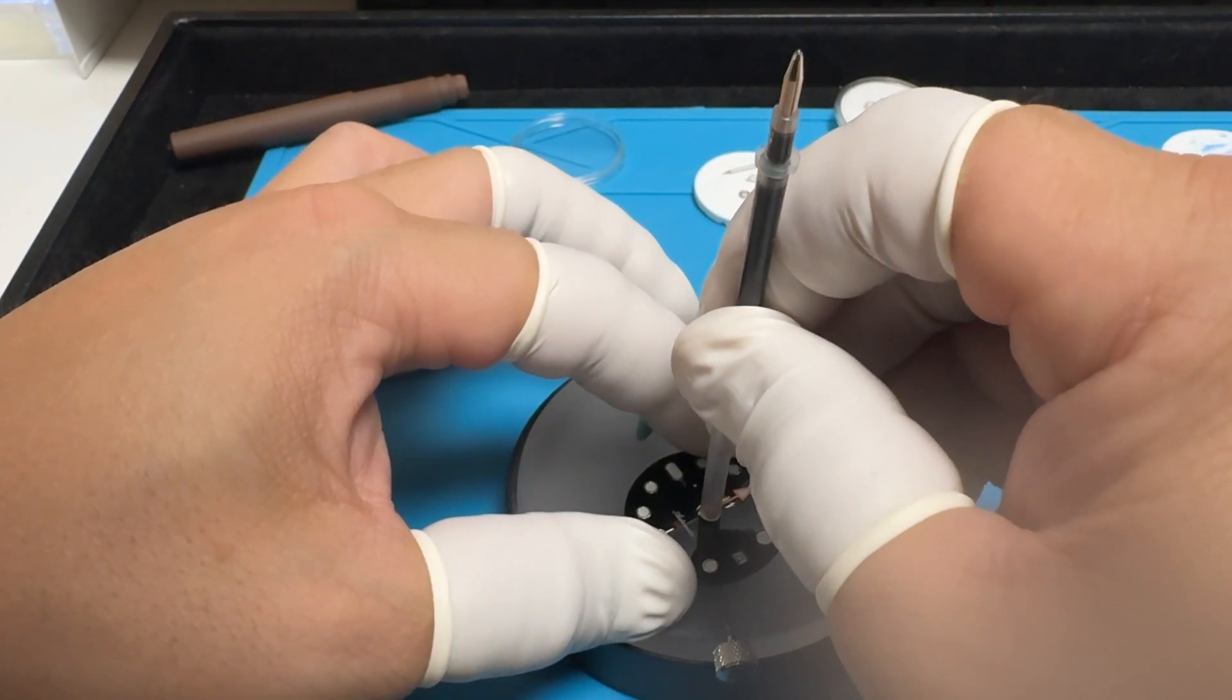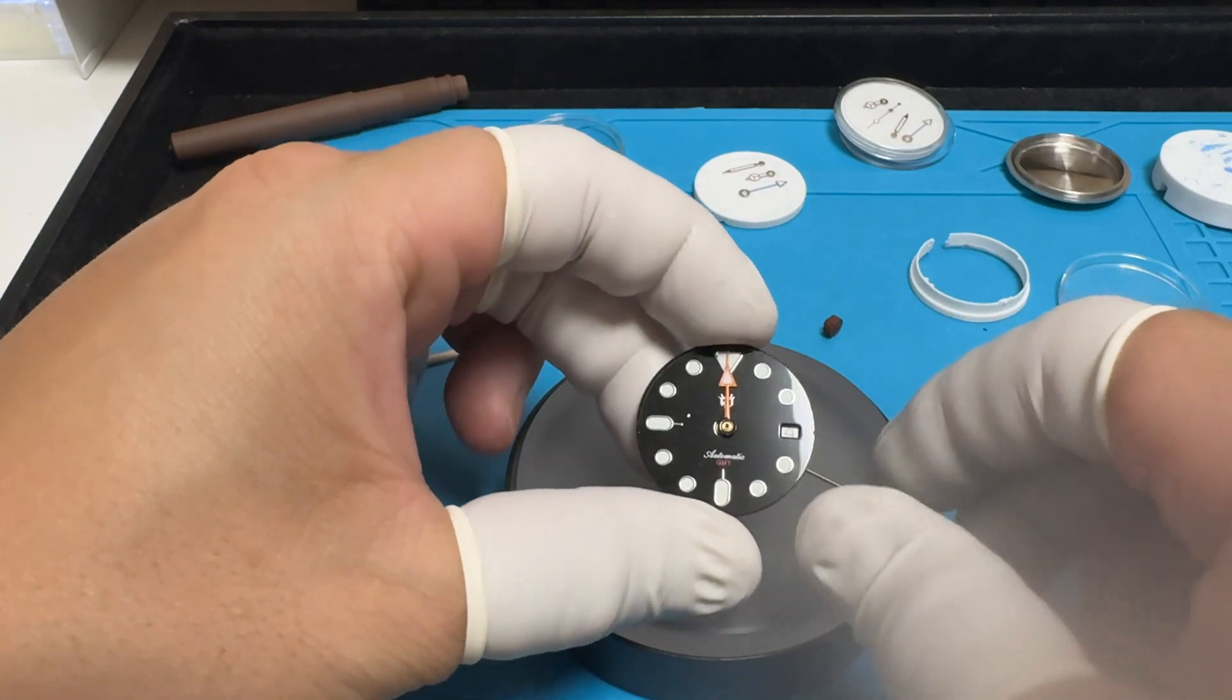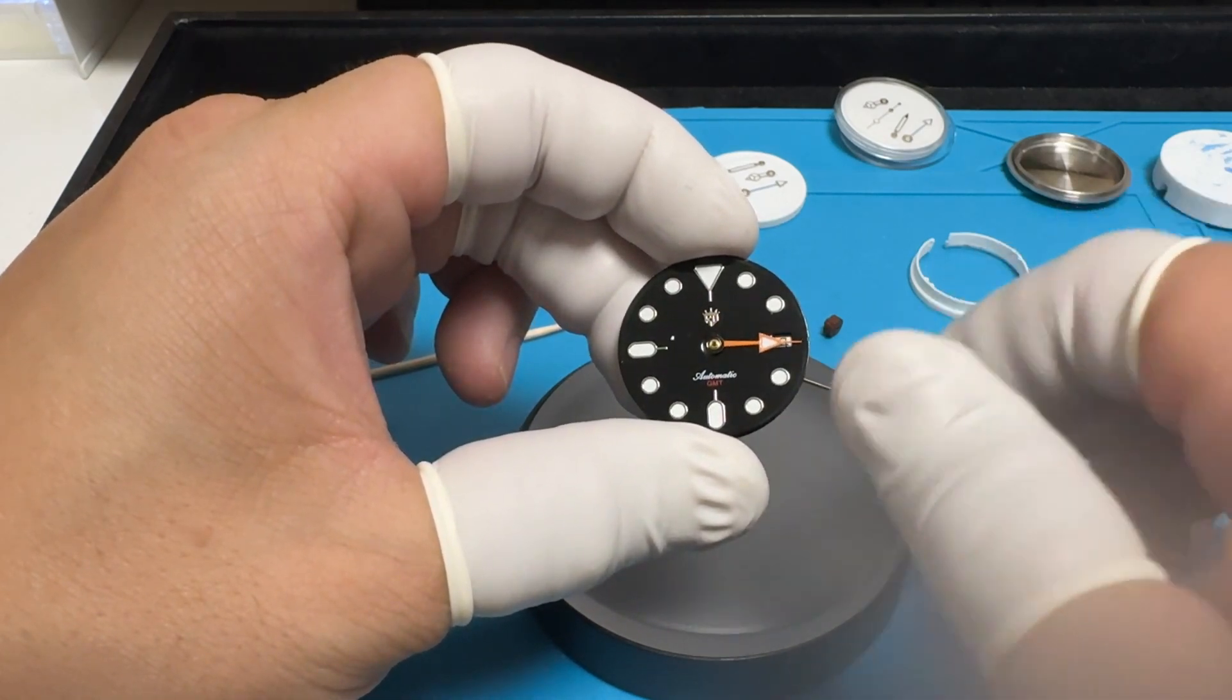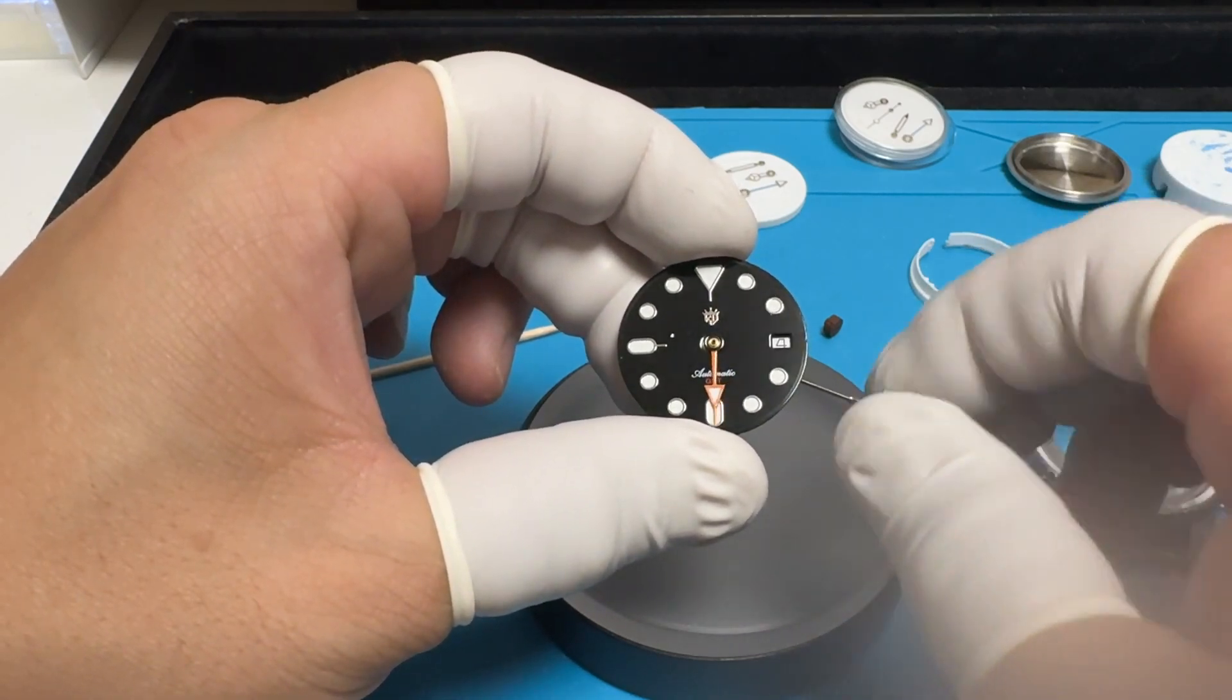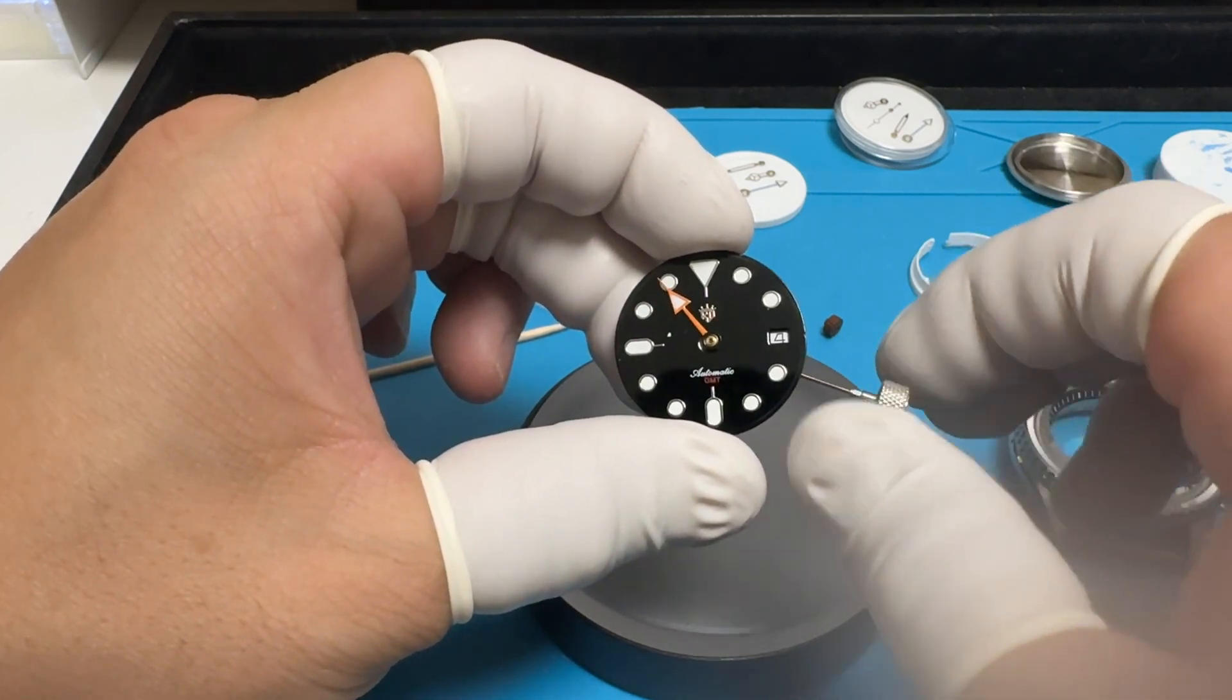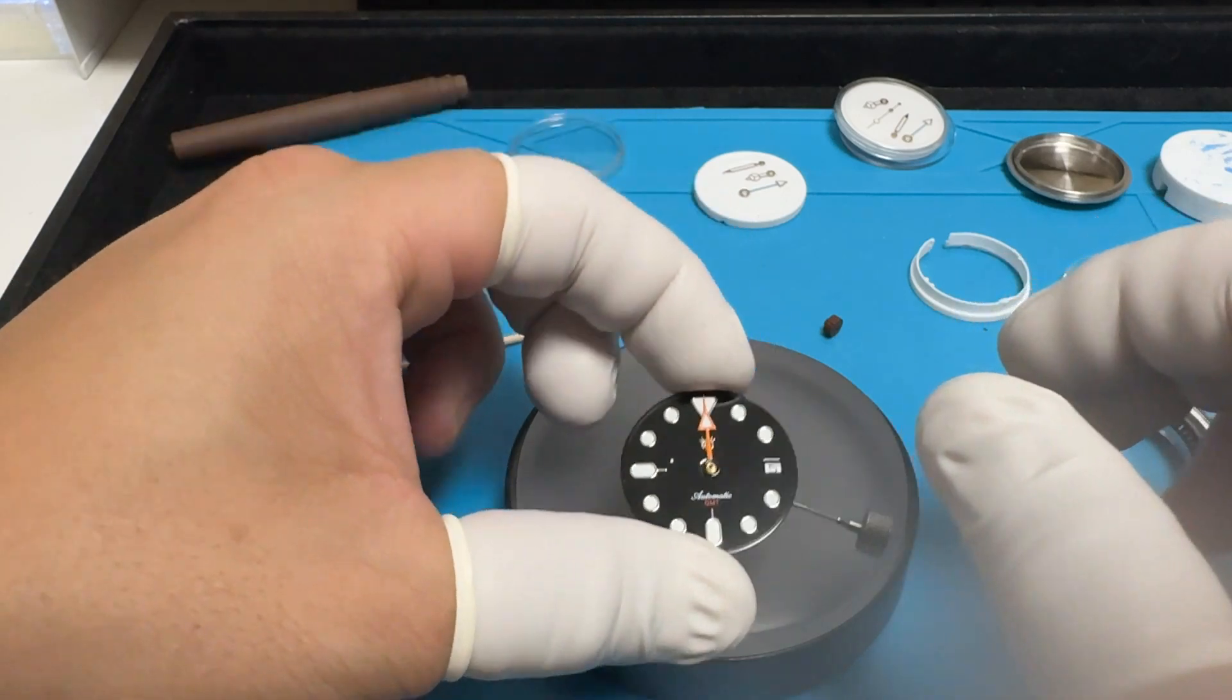Finally you should be able to push it all the way down, and we have successfully mounted the GMT hand. It should go around the dial in 24 hours, so just make sure that after 24 hours it will flick over to the next date. There you go, so it's perfectly mounted.